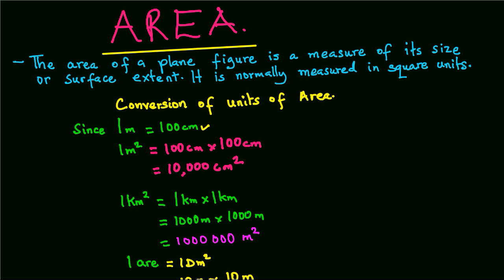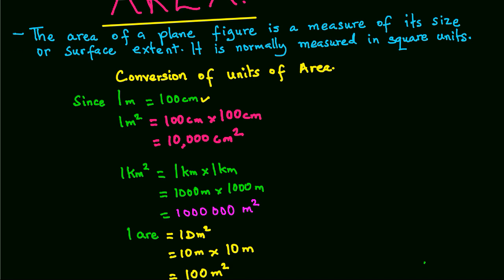In a similar argument, or by similar argument, 1 square kilometer will be equals to 1 million square meters.